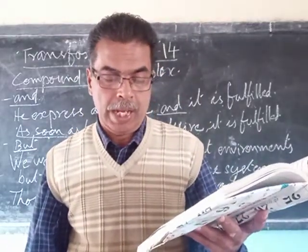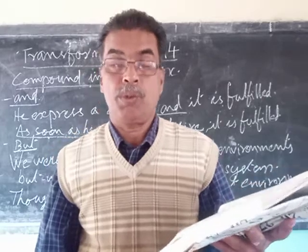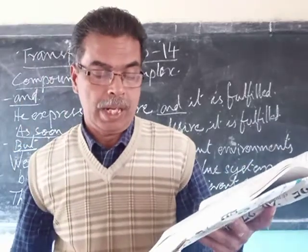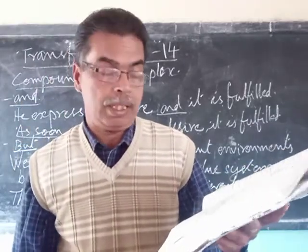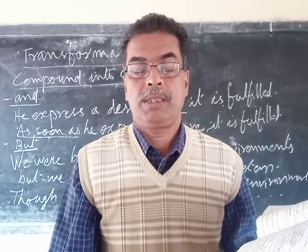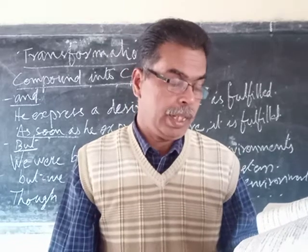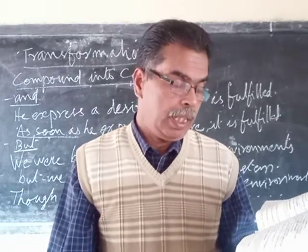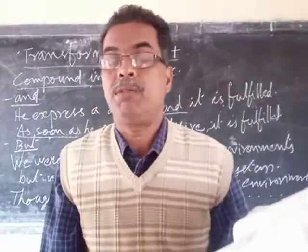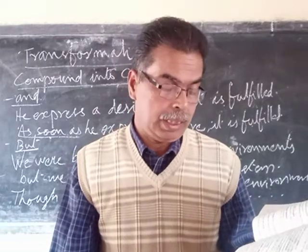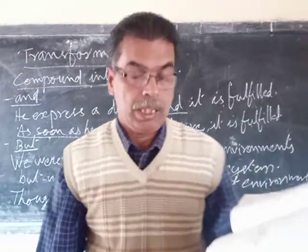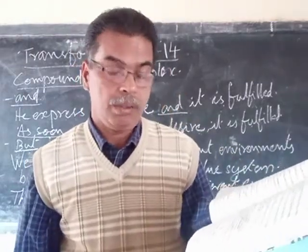For example: 'Her married life was very happy and her smiling face showed it.' Here 'and' is the conjunction. Converting this: 'Her smiling face showed that her married life was very happy.' 'That' is the subordinating conjunction used. The clause 'her smiling face showed' is retained as the principal clause, and the other is changed into a subordinate clause.